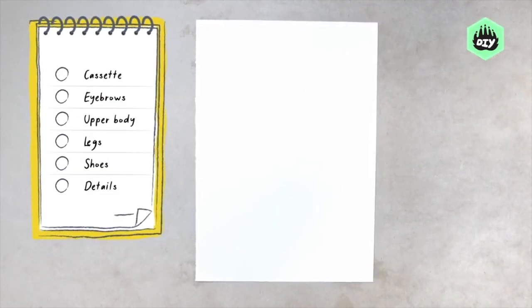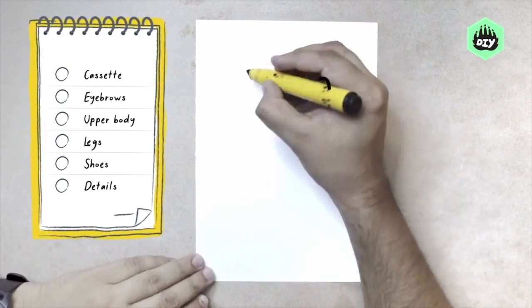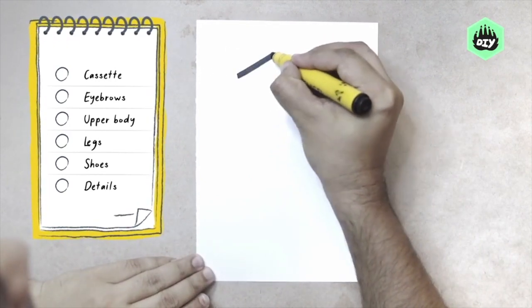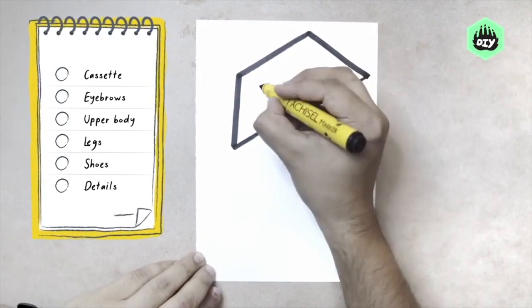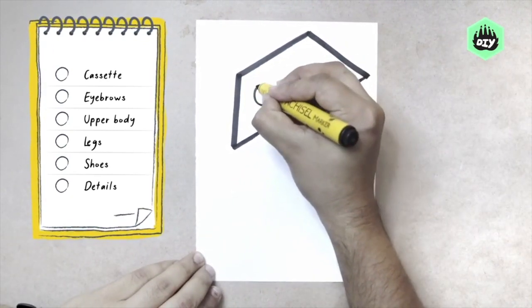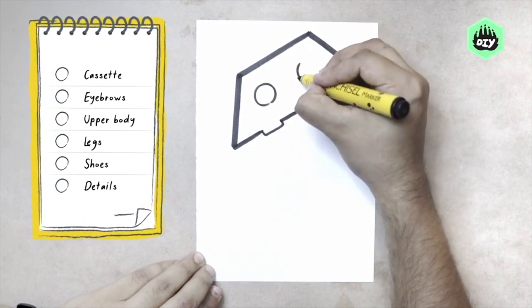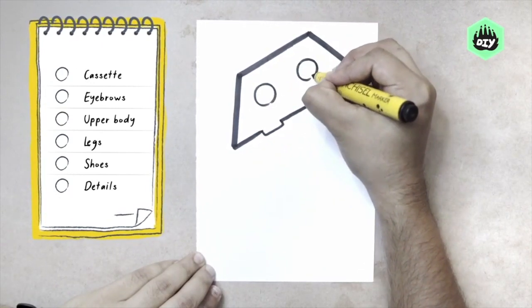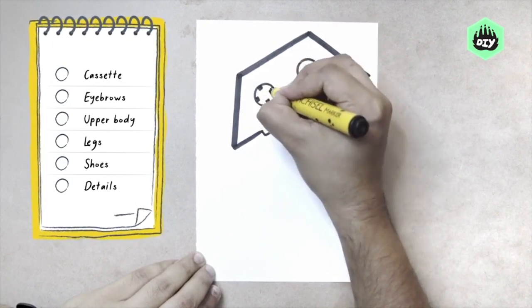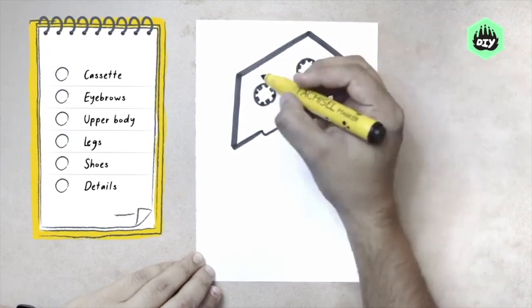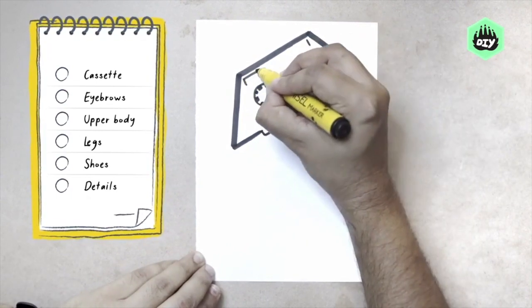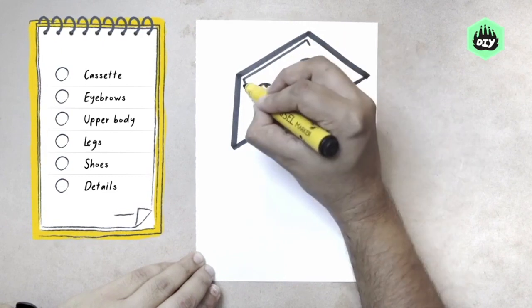So, let's turn a cassette tape into a person. For this personification, we will start by defining the outline of a cassette tape — it looks like a trapezium. Once we've made the outline, we make two circles spaced equally apart and add these kind of patterns on the circumference. A few more details, which will make it look like an actual cassette.